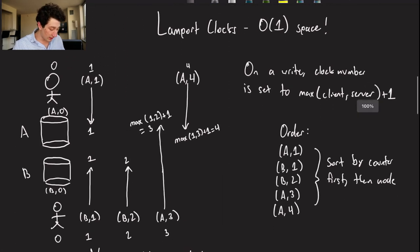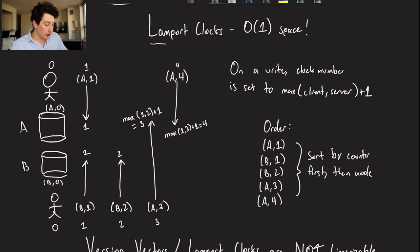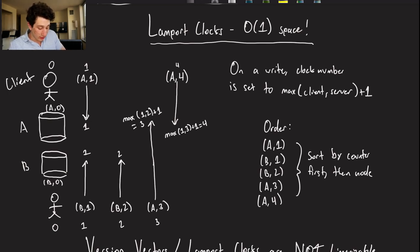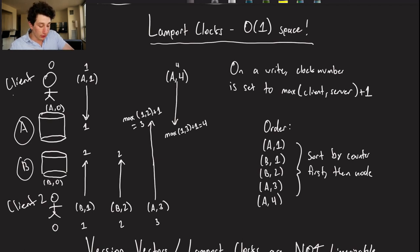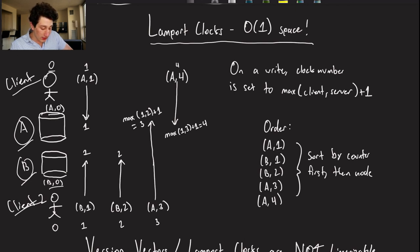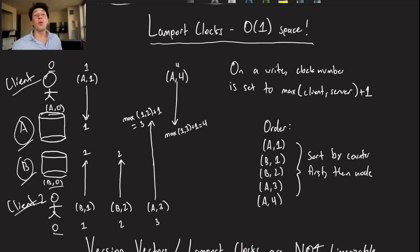Lamport clocks take constant O(1) space. Imagine we have one client on the left and another client on the right making concurrent writes that we want to order. Every single element of our system — both clients and both databases — has a local counter starting at zero. Every time you make a write, you increment your counter, but the key rule is: you don't just increment by one. You take the max of the counter currently on the client and the database being written to, and add one to that.